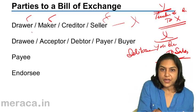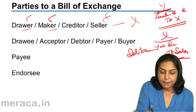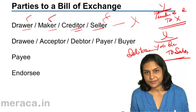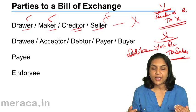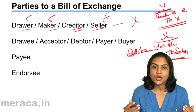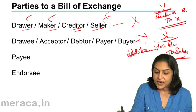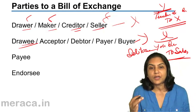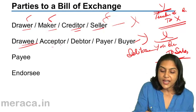In a bill of exchange, the person who makes the bill — the drawer, the maker — is nobody but the seller, the creditor. The person on whom the bill is drawn, Y, is called the drawee. He is also called the acceptor. Without his acceptance, the bill is not a valid bill of exchange.